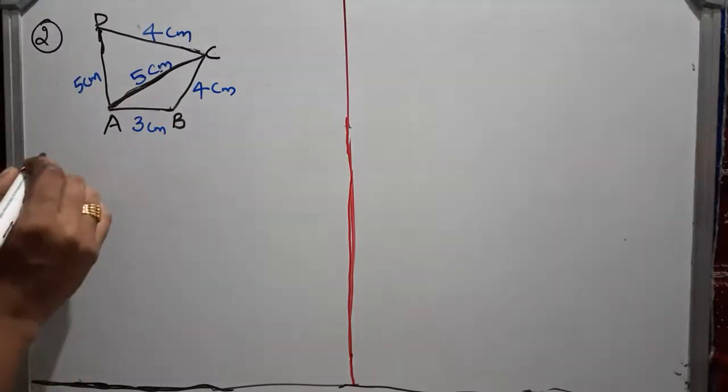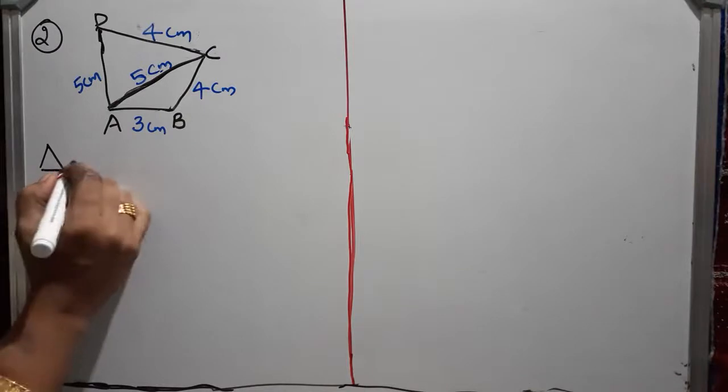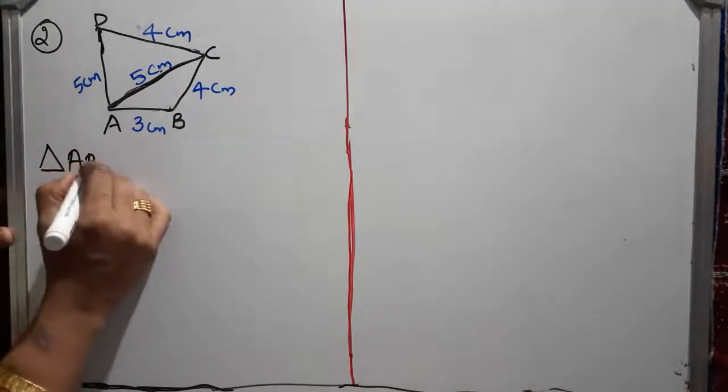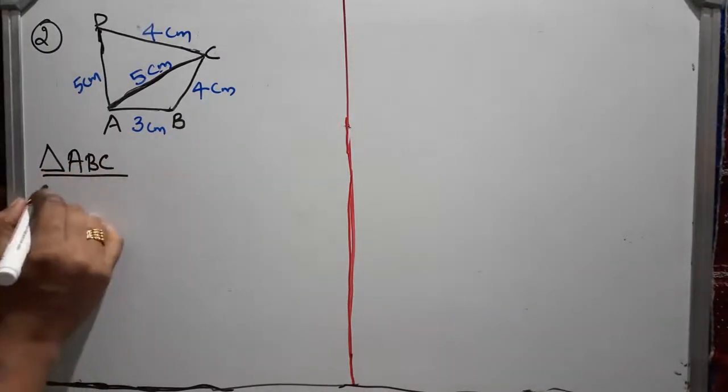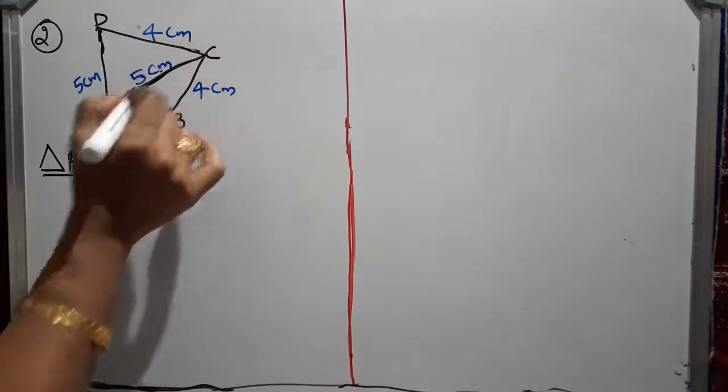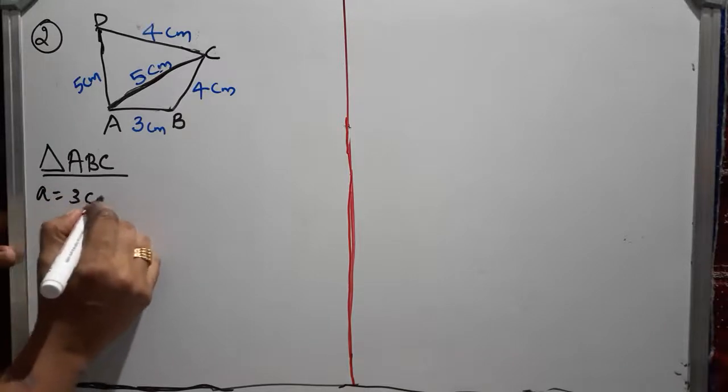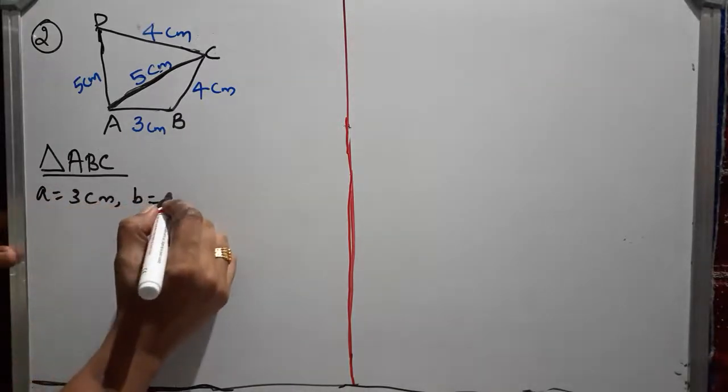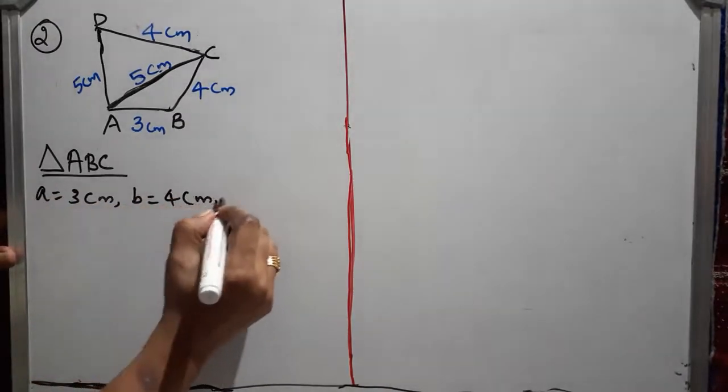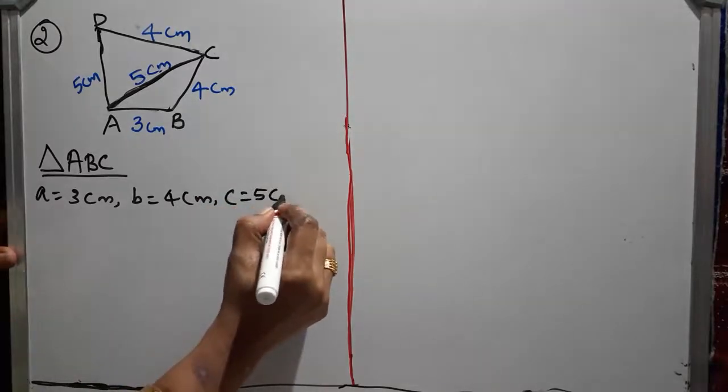So, first we can take the first triangle as triangle ABC. Triangle ABC, that means ABC with sides 3, 4, 5. A equal to, you can take anyway, 3 cm, B is equal to 4 cm, C is equal to 5 cm.